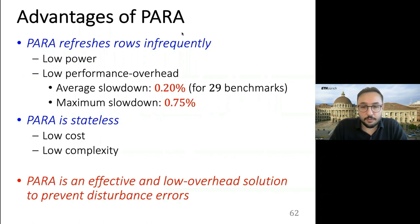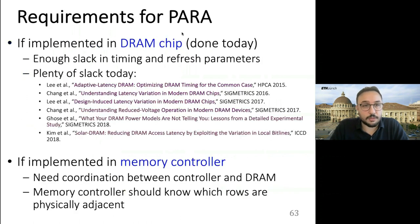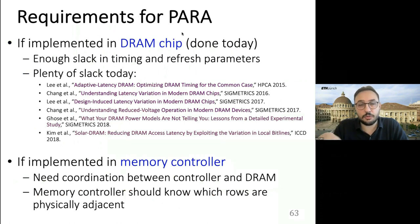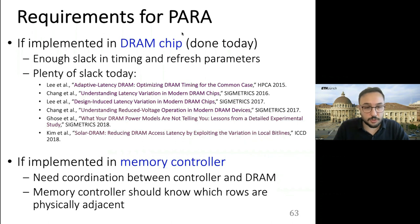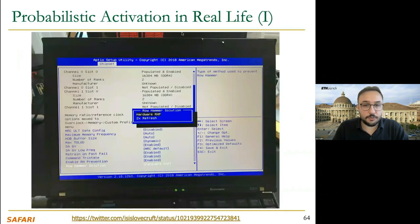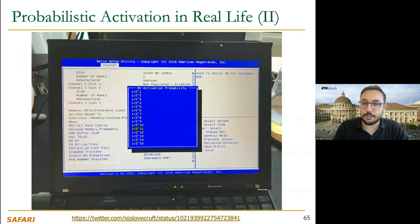PARA is an effective and low-overhead solution to prevent disturbance errors. If implemented in the DRAM chip, it just needs enough slack in timing to also refresh as needed. If implemented in the memory controller, it needs good coordination between the controller and the DRAM chip. You can see a screenshot from some BIOS settings showing that PARA is actually implemented in real systems.